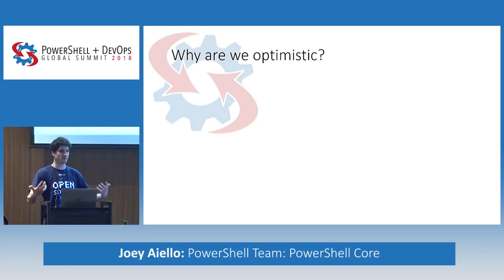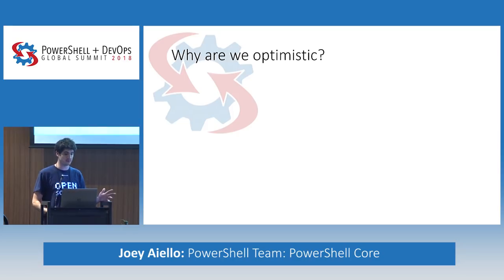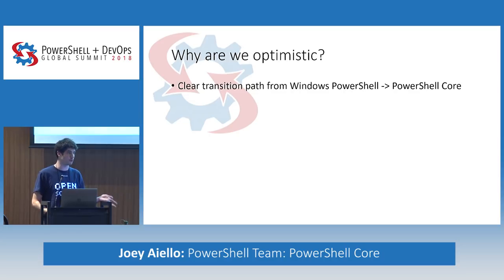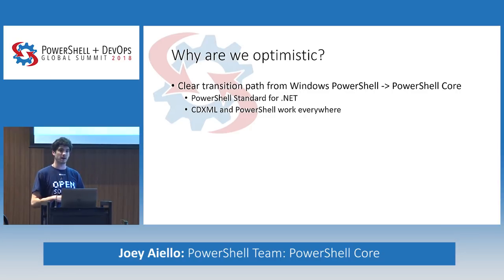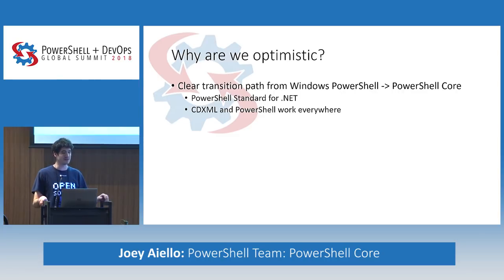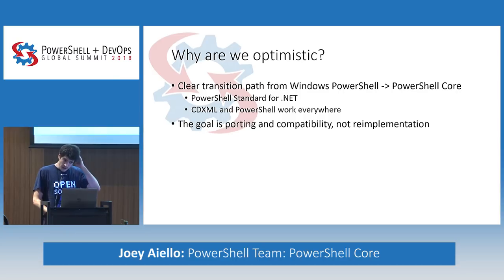Why are we optimistic about module coverage progress? There's a clear transition path from Windows PowerShell to PowerShell Core via PowerShell Standard for .NET — recompile against PowerShell Standard and you get compatibility with PowerShell Core. CDXML, PowerShell script, Win32 P/Invokes, native dependencies — that stuff just works in PowerShell. We've made very small scripting language changes that technically count as breaking, but by and large we're not seeing script breakage from 5 to 6 even to the magnitude we saw from 2 to 3.